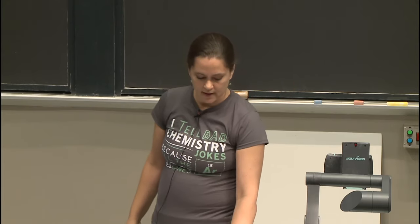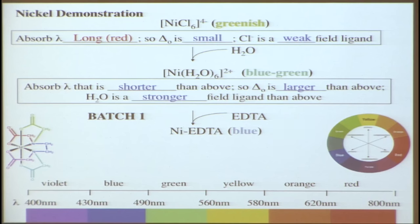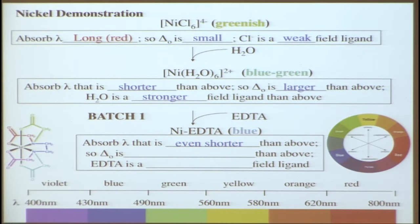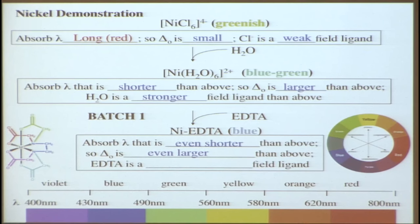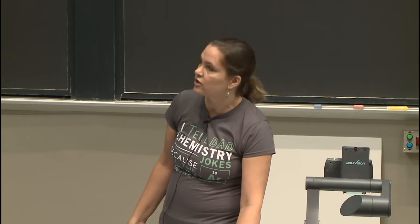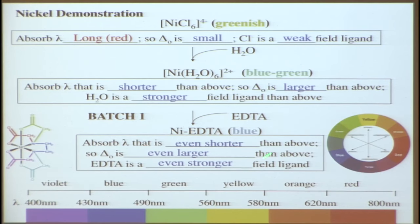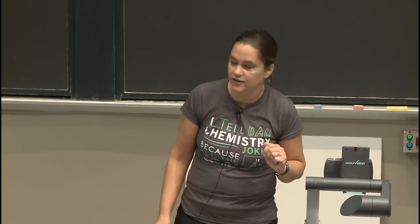Splitting the sample, batch one gets EDTA—our chelating agent. Adding EDTA makes the solution even more blue, absorbing even more orange light, meaning an even shorter wavelength and even larger splitting energy. This predicts EDTA is a stronger field ligand than water, which is correct. Also note the entropy increase: we're displacing six water molecules with one EDTA molecule that binds to the metal with six points of attachment.